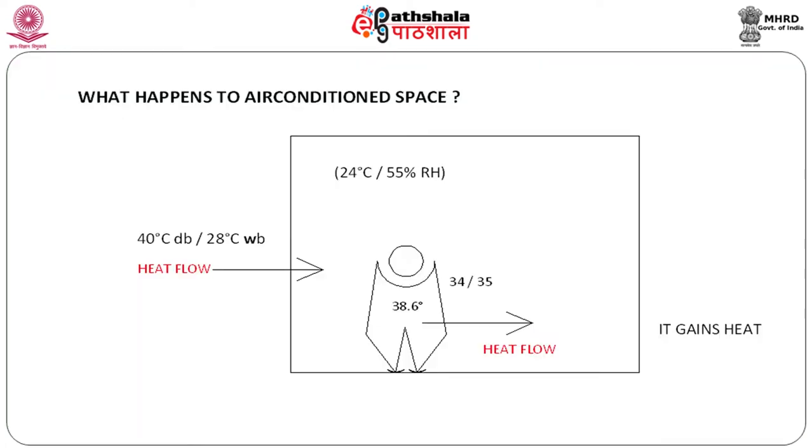At 24 degrees, one wants 55 percent relative humidity. At these conditions, you also require a small air movement across your body of something like 25 feet per minute. To give you an idea of what 25 feet per minute is: if I had a paper on my table, it should not flutter. A paper fluttering means the velocity is beyond 25 feet per minute and I am likely to feel uncomfortable. So a person is comfortable with 24 degrees centigrade, 55 percent RH, and 25 feet per minute air movement.